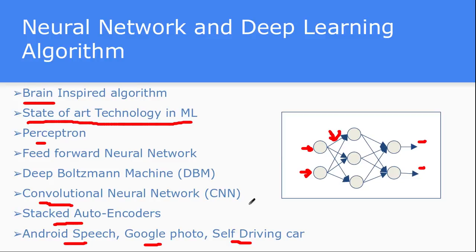These are all families of neural network or artificial neural network algorithms. In a future lecture, we will see each individual algorithm and implement them. Google has already released the open source TensorFlow library, so we will implement those algorithms inside TensorFlow. That's it for neural networks.